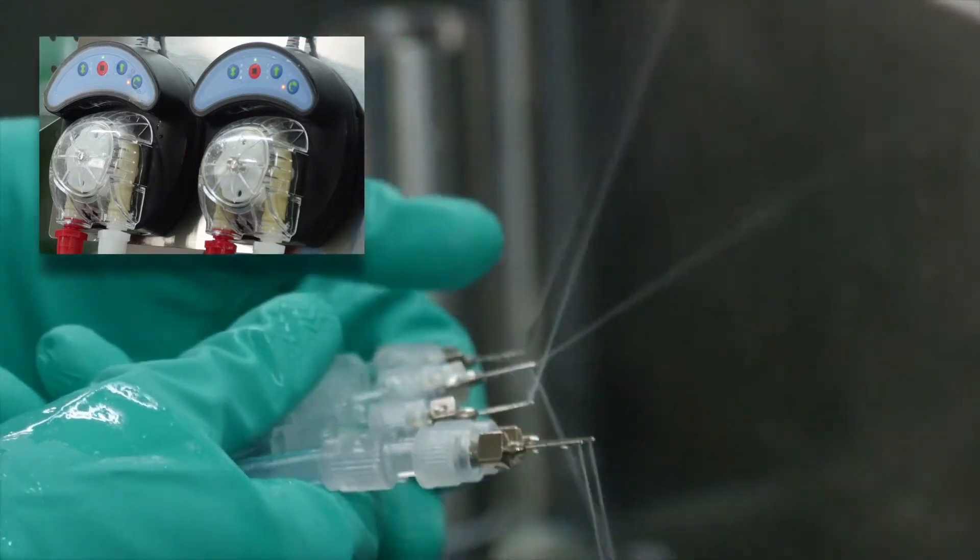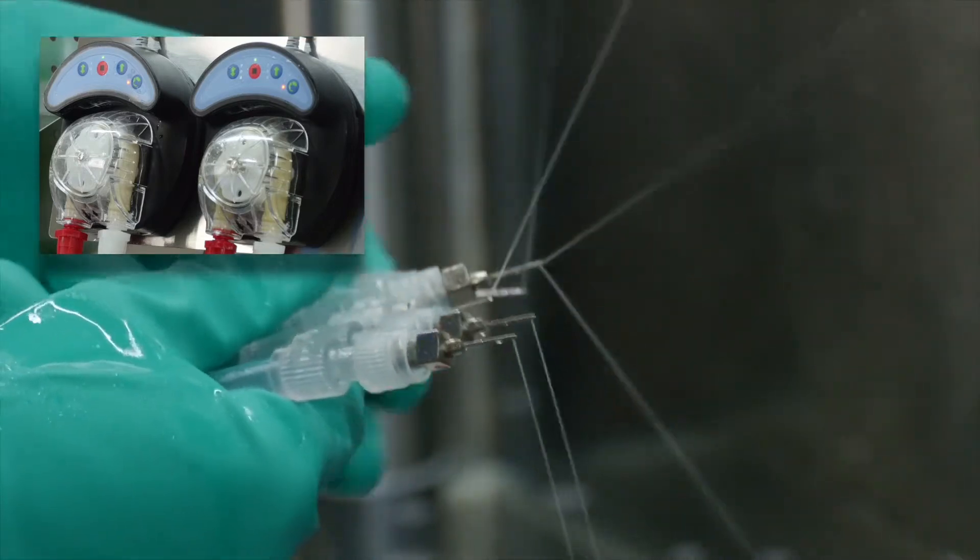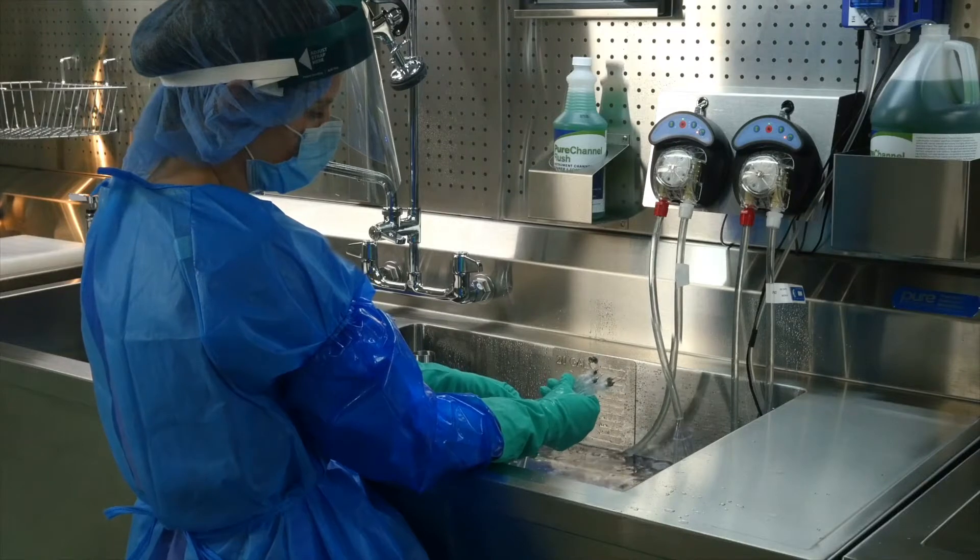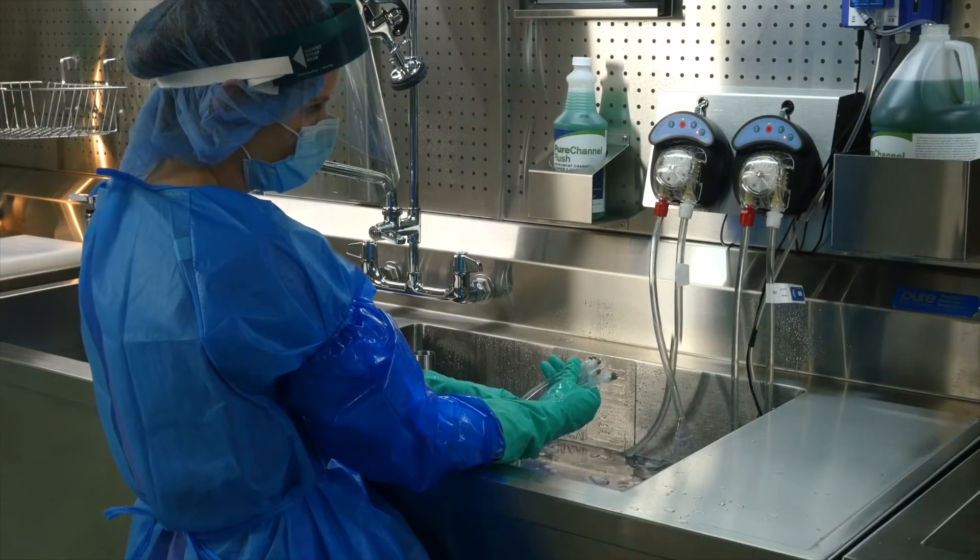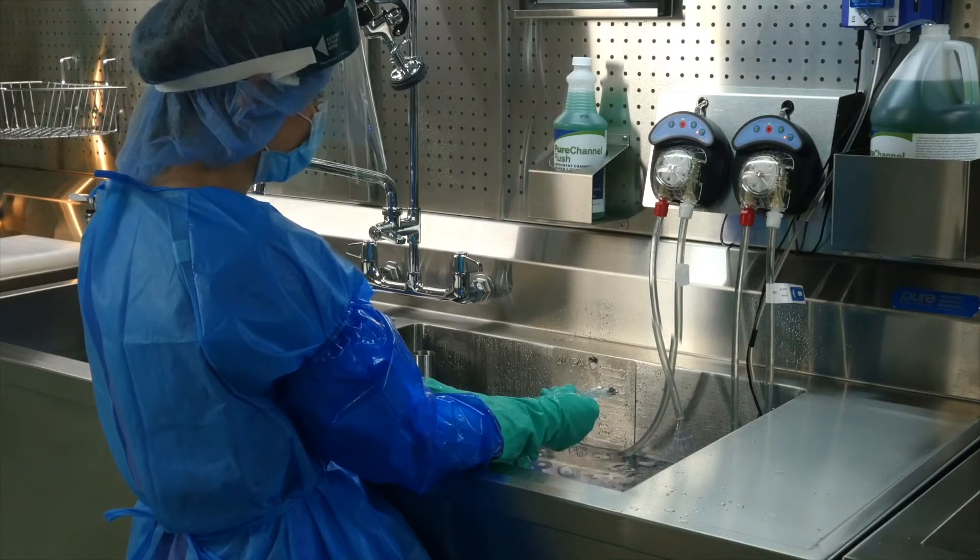The low speed setting provides around 500 milliliters of flushing per minute. 500 milliliters is the total volume and should be divided accordingly by the number of instruments attached.